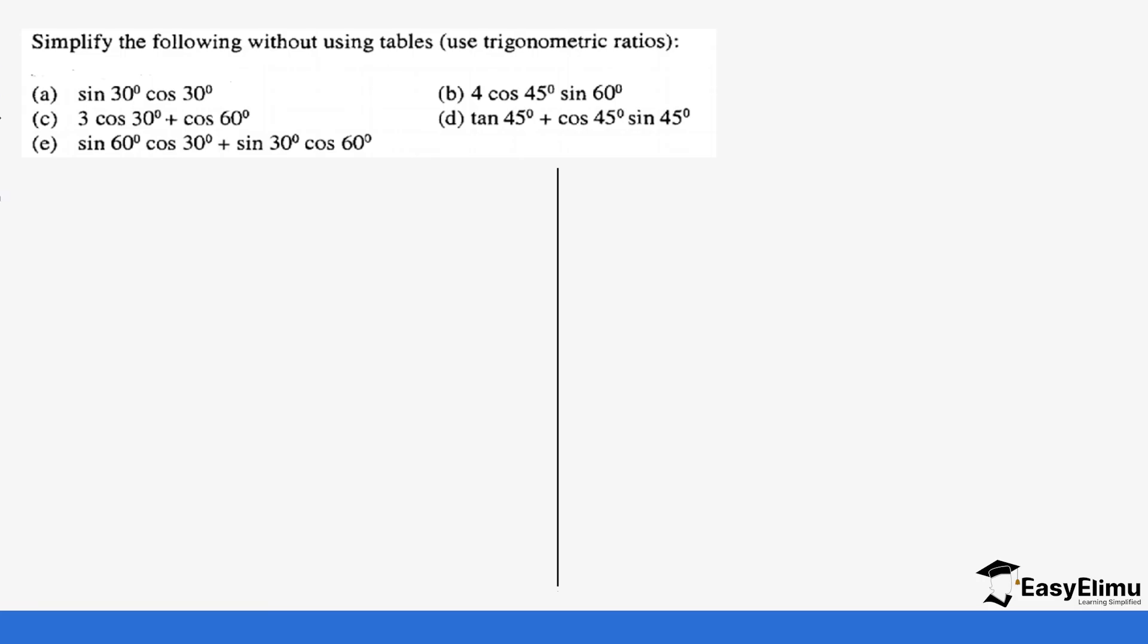The first question is going to be sine 30 degrees, cos 30 degrees. Basically, there's a multiplication in between. So we know that sine 30 is a half times cos 30 is root 3 over 2. So if you multiply this, you're going to get root 3 over 4.